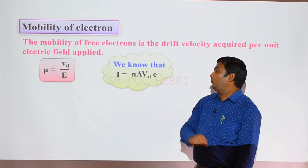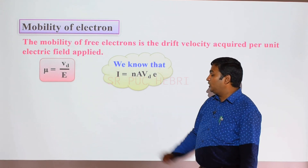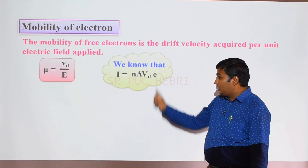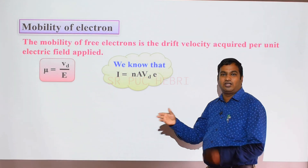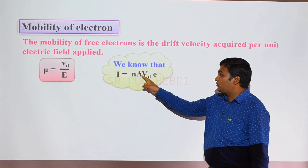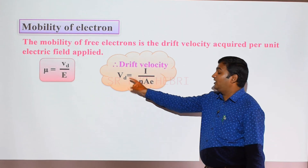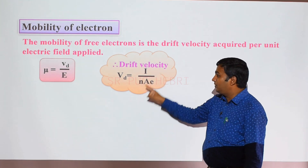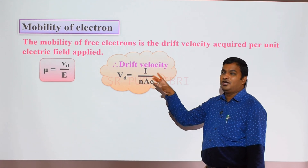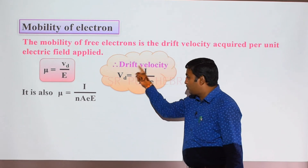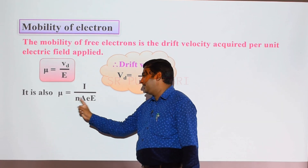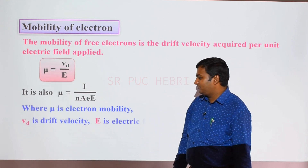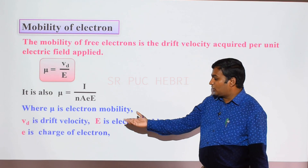We know the equation: electric current I is equal to N into A into Vd into e. Rearranging for drift velocity, Vd becomes I divided by N times A times e. Substituting into the mobility formula, mobility mu is equal to I divided by N times A times e times E, where mu is electron mobility, Vd is drift velocity, E is electric field, e is charge of the electron, and A is the area of cross section of the conductor.